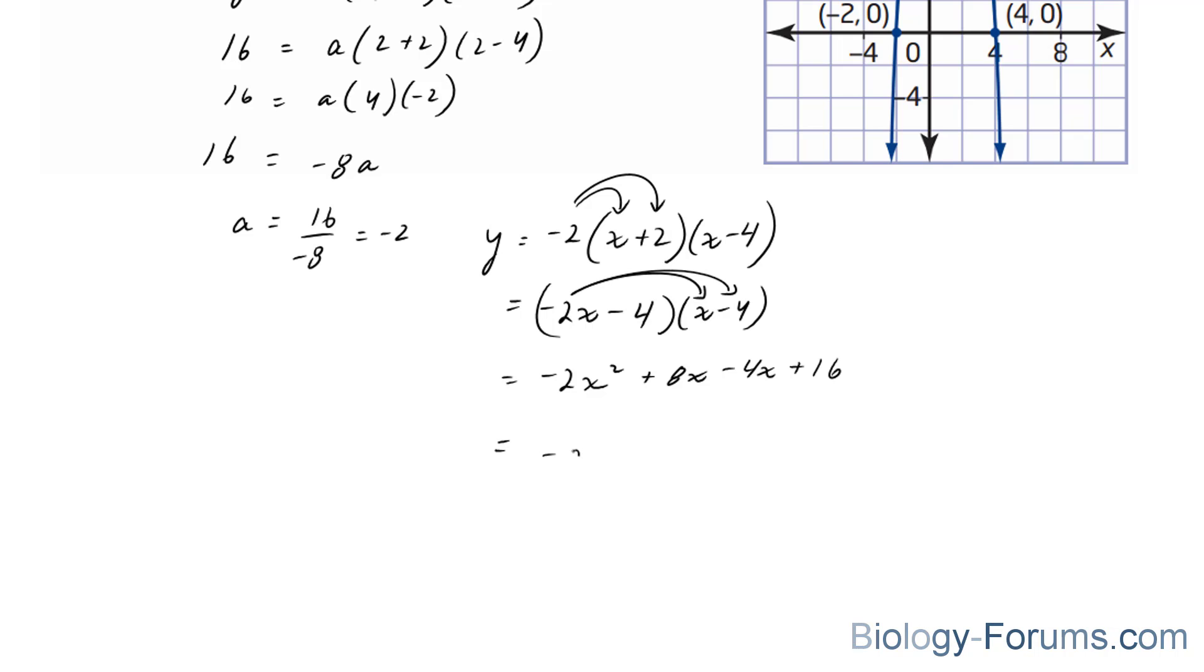We end up with negative 2x squared minus 4x plus 16. And there you have it. That equation is in standard form.